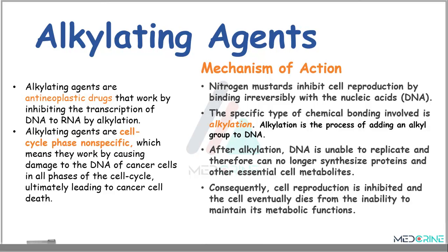This gives rise to a class of drugs known as alkylating agents. These alkylating agents are antineoplastic or anticancer drugs which work by inhibiting the transcription of DNA to RNA by a process known as alkylation. Alkylating agents are cell cycle phase non-specific drugs, which means they work by causing damage to the DNA of the cancer cells in all phases of the cell cycle, ultimately leading to cancer cell death.